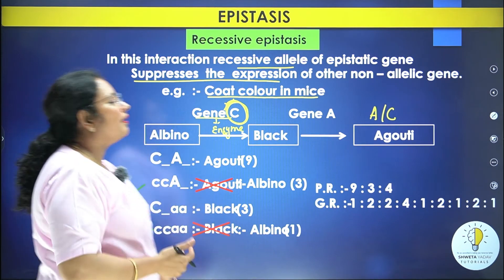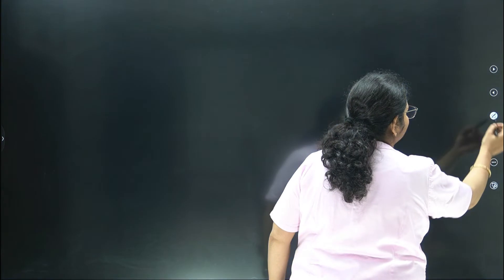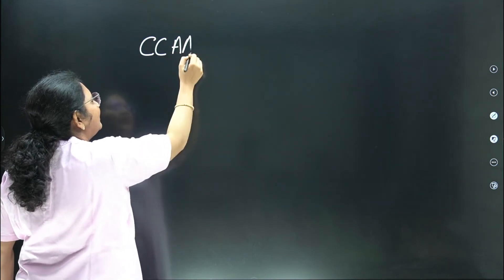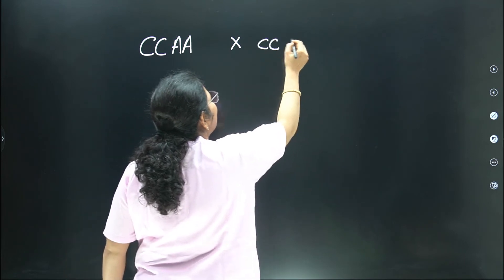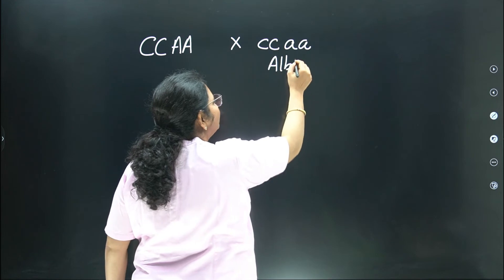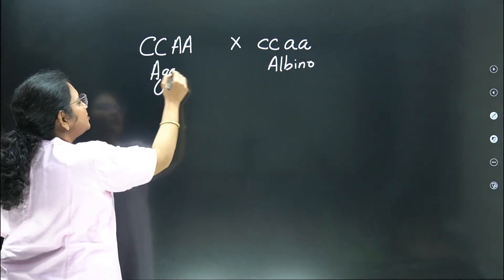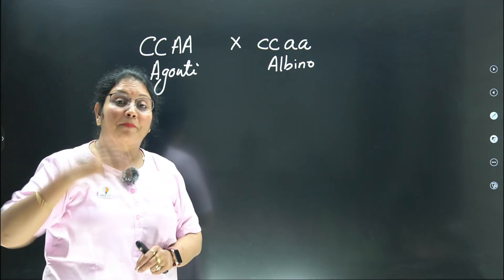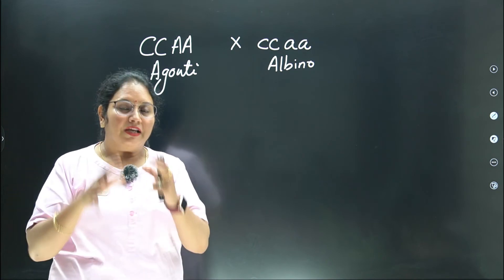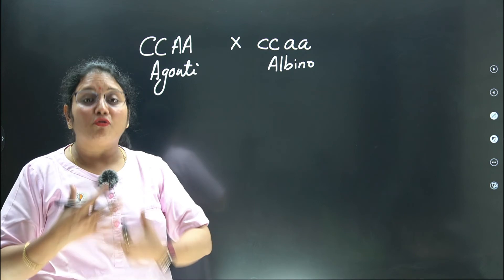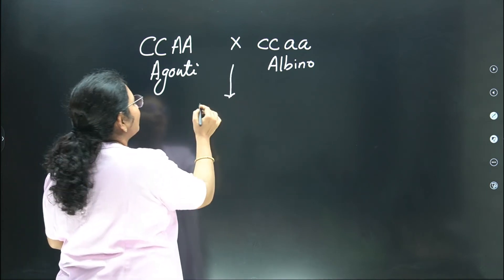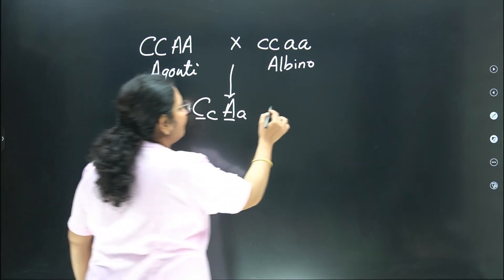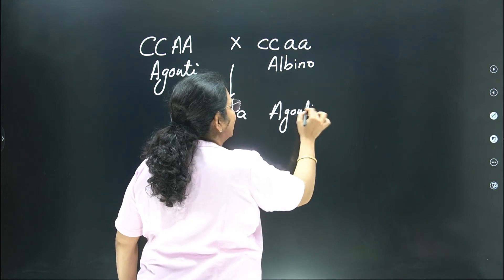A cross was made between agouti and albino. Agouti is CC AA and albino is cc aa. The F1 generation from this cross is Cc Aa — both dominant alleles are present. So all F1 are agouti in color. Now F1 (agouti) is crossed with F1 (agouti), and we study the F2 generation outcomes.